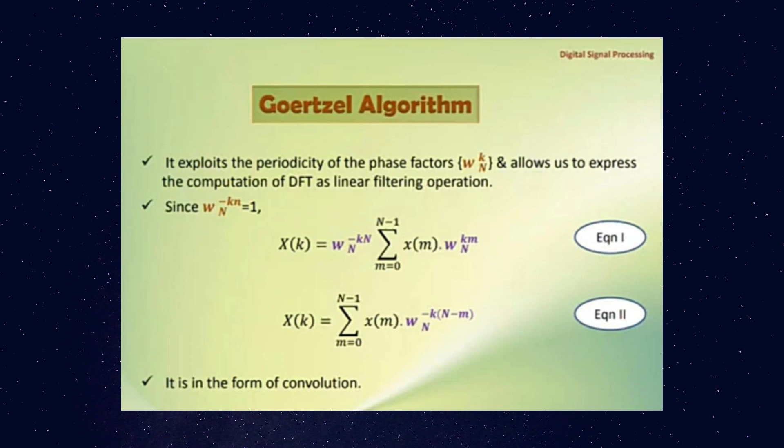We know since ωₙ⁻ᵏⁿ equals 1, we can write X(k) equals ωₙ⁻ᵏⁿ into summation m equals 0 to n minus 1, x(m) into ωₙᵏᵐ. Let us consider this as Equation 1.